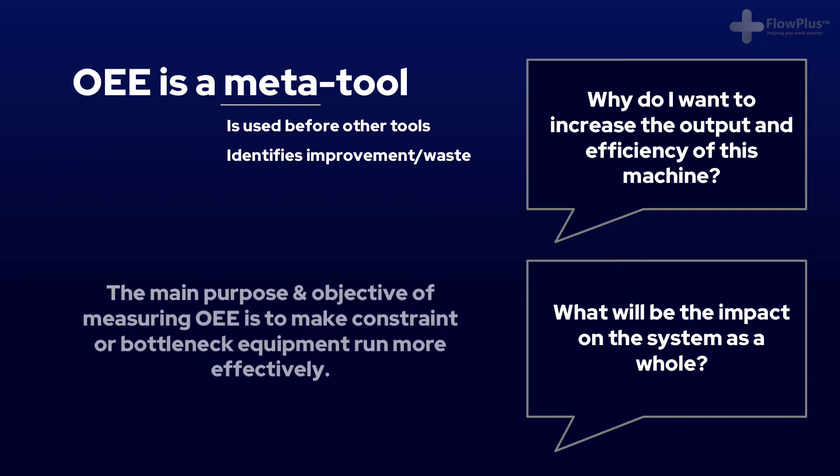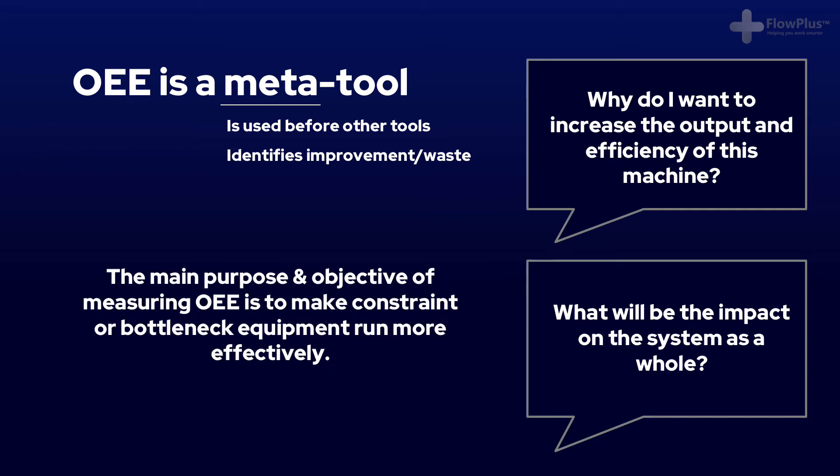The main purpose and objective of measuring OEE is to make constraint or bottleneck equipment run more effectively. If you increase the effectiveness of a non-bottleneck process, it will result in no impact on the system's output as a whole.